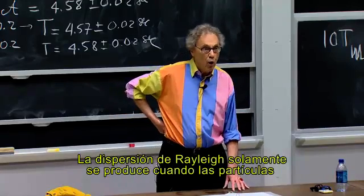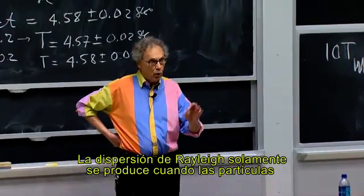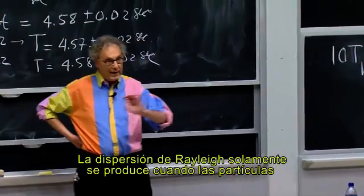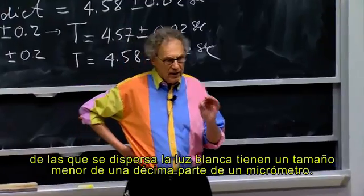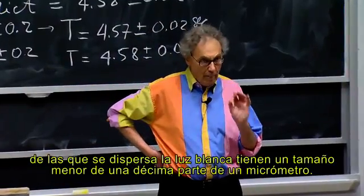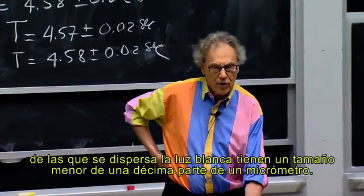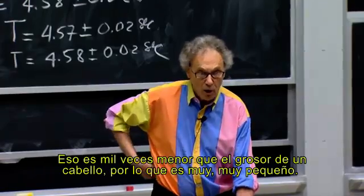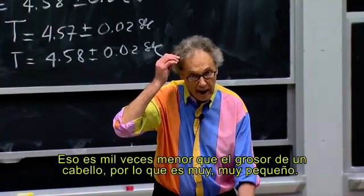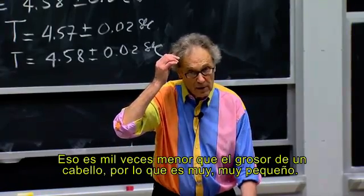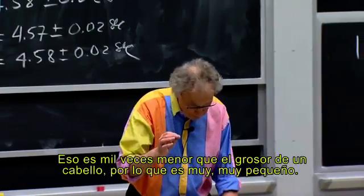Rayleigh scattering only happens when the particles off which the white light scatters are smaller than a tenth of a micron. That means a thousand times smaller than the thickness of your hair. So it has to be very, very small.